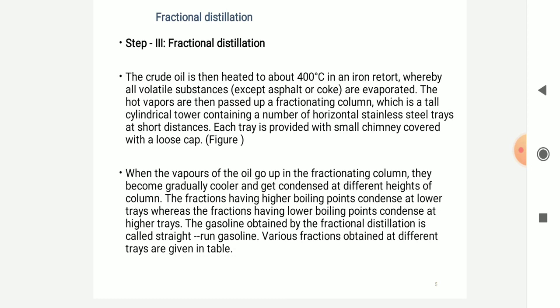Each tray is provided with small chimney caps. When the vapors of oil go up the fractional column, they become gradually cooled and get condensed at different heights of the column. The fractions having higher boiling points condense at the lower trays, while the fractions having lower boiling points condense at the higher trays. The gasoline obtained by fractional distillation is called straight-run gasoline, while the various fractions obtained at different trays are as shown in the table.